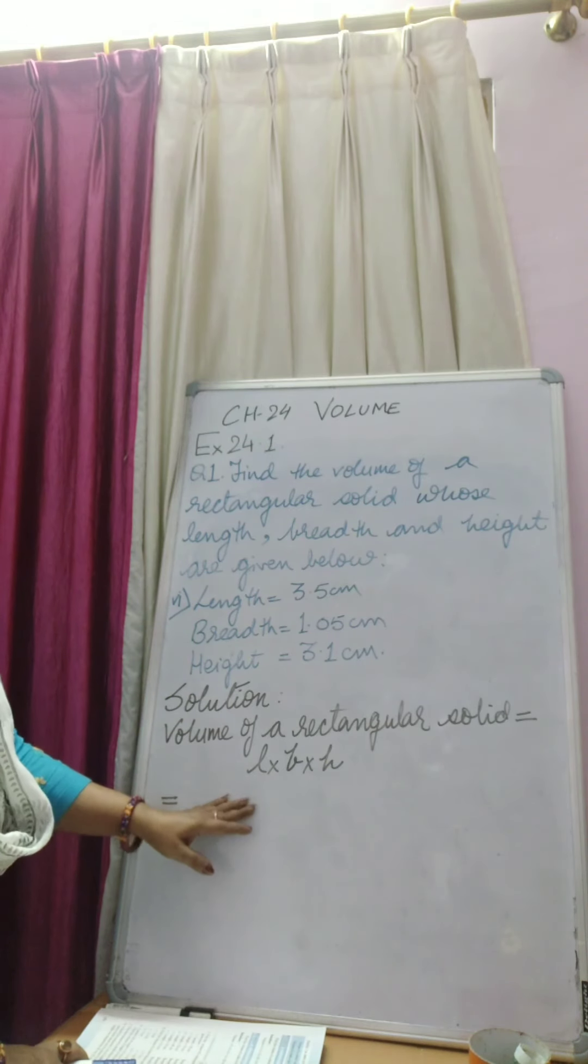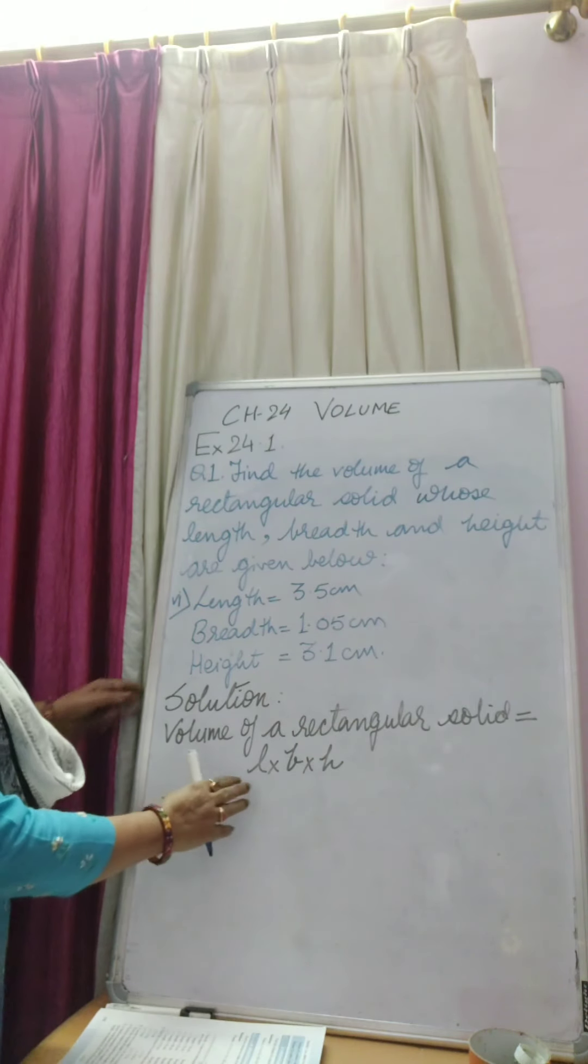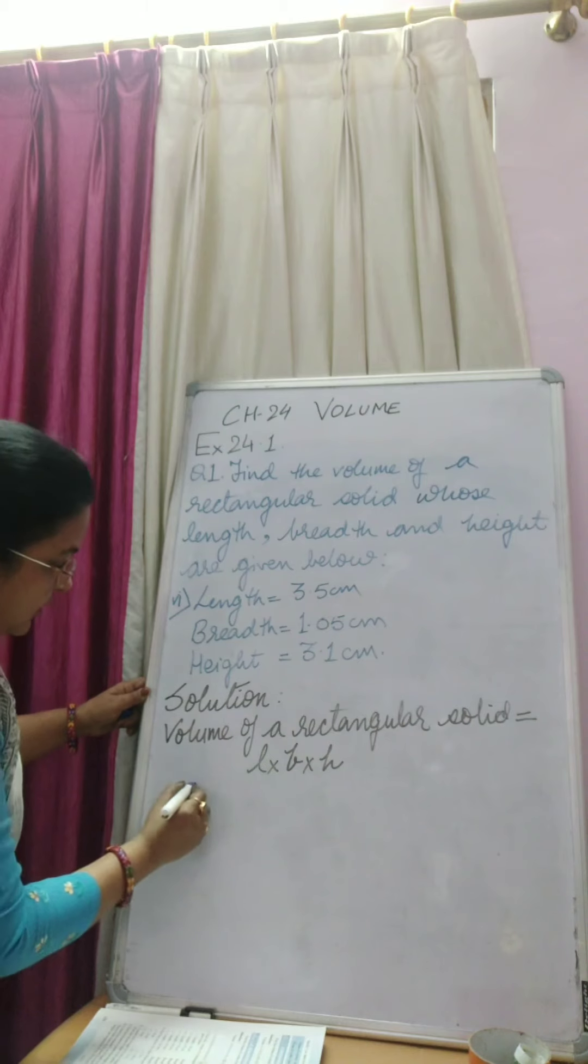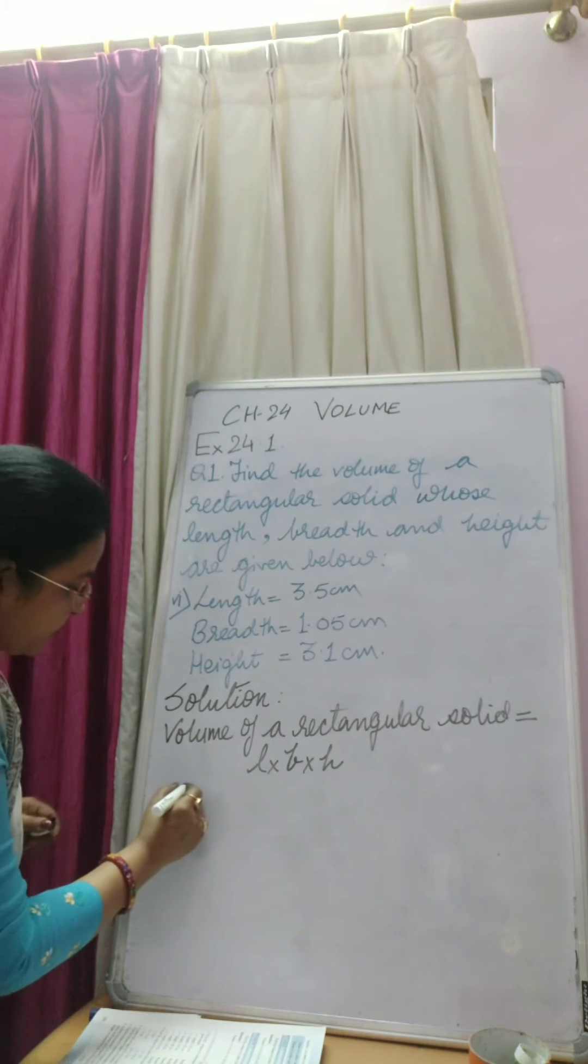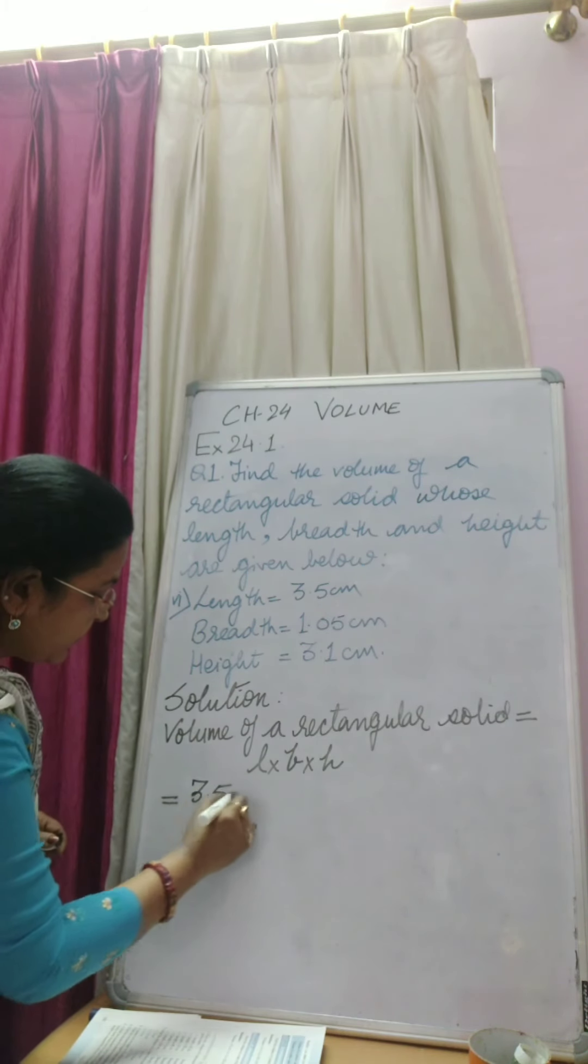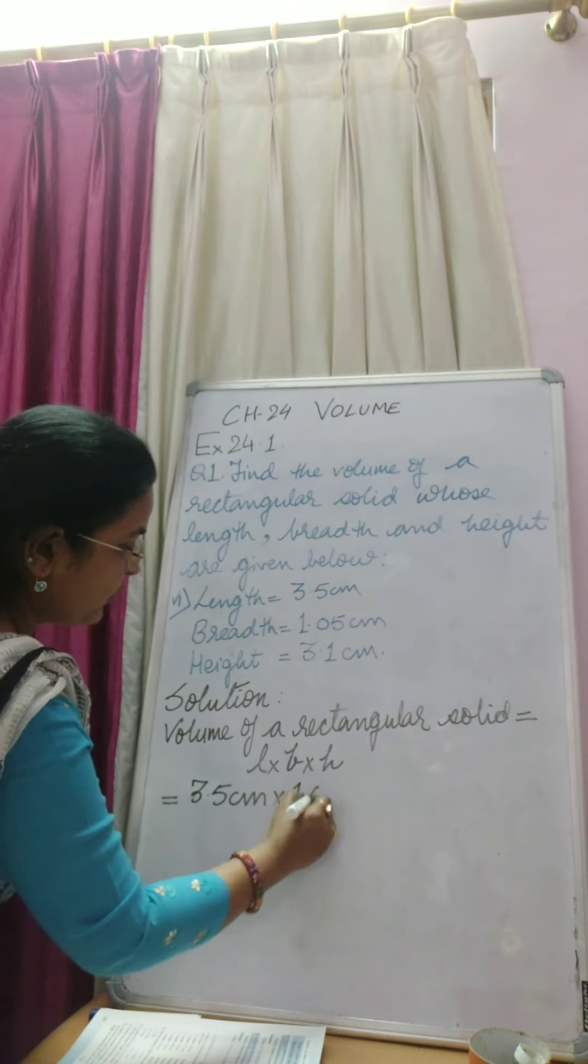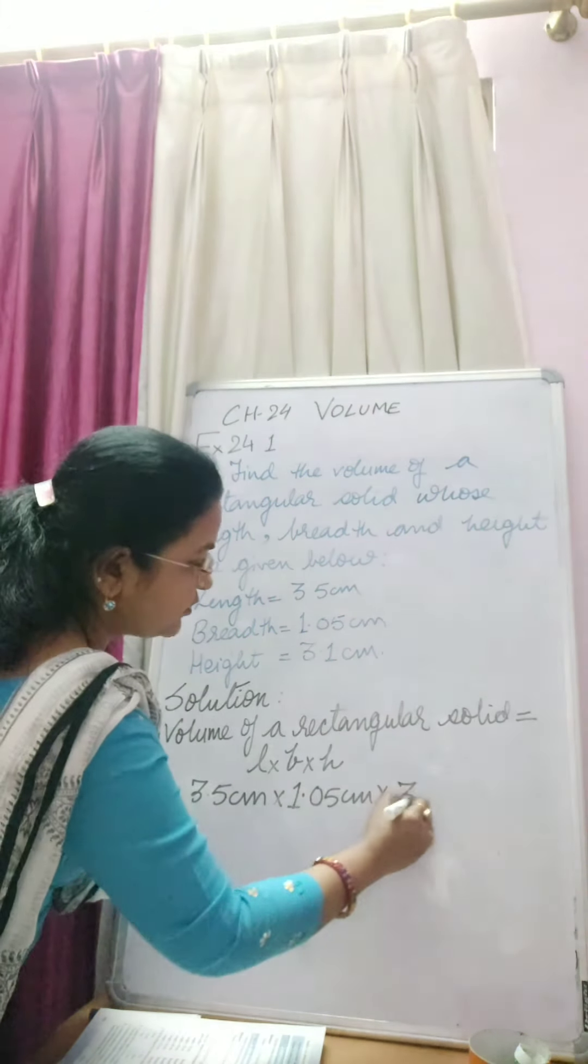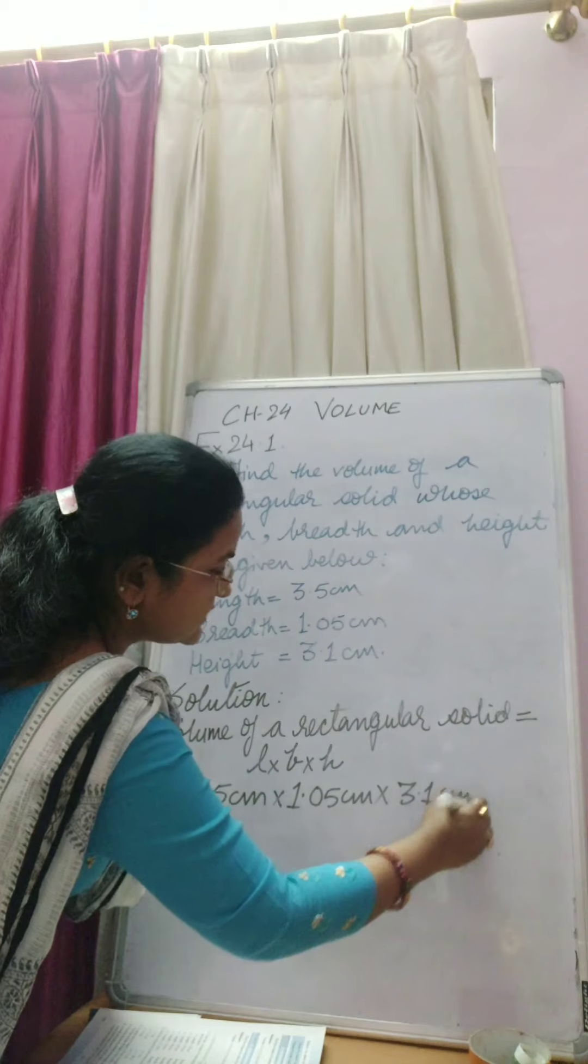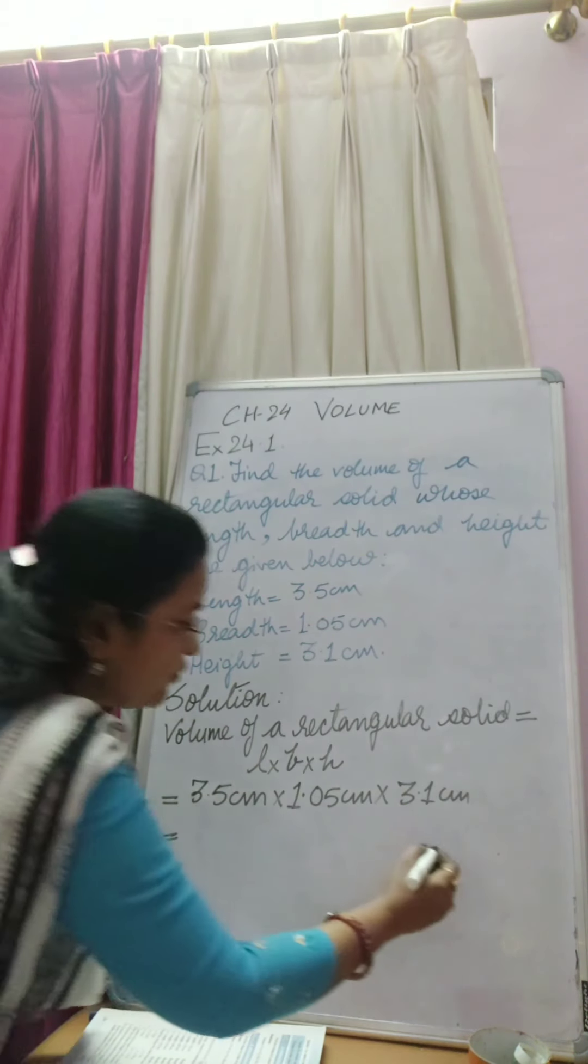Volume of a rectangular solid we all know is length into breadth into height. Now we will put the values here. Length 3.5 cm, so we will write 3.5 cm into breadth 1.05 cm into height 3.1 cm. Now we will multiply 3.5 cm, you can do rough work here.